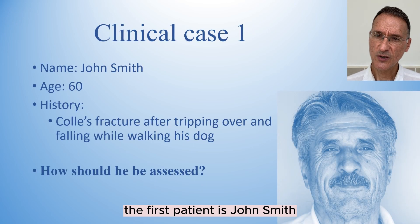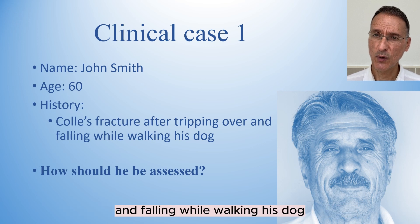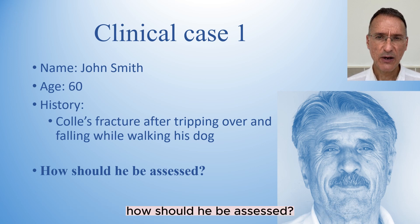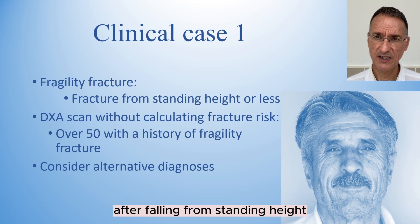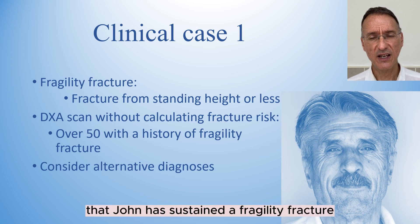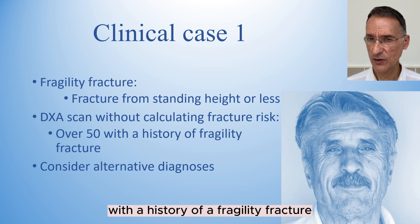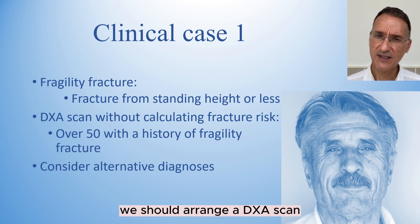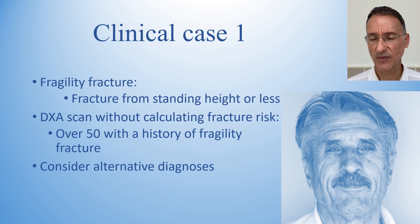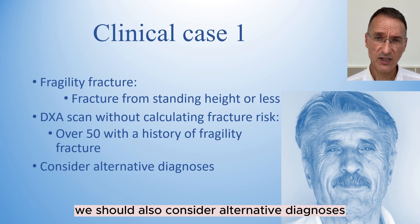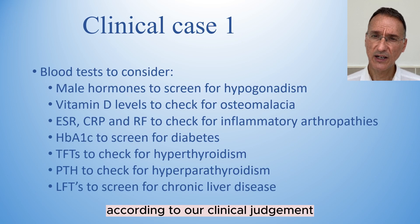The first patient is John Smith, a 60-year-old man who develops a Colles fracture after tripping over and falling while walking his dog. Given that the fracture happened after falling from standing height, we can state that John has sustained a fragility fracture. Considering that he is over 50 with a history of a fragility fracture, we should arrange a DEXA scan without needing to calculate the fragility fracture risk. We should also consider alternative diagnoses and arrange blood tests including male hormones for hypogonadism screening.